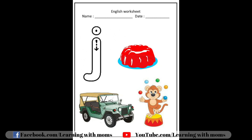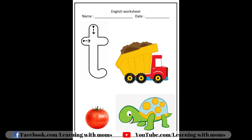J is down like a hockey bat and a ball on the top. T is down with a right tail and a stick on the top.